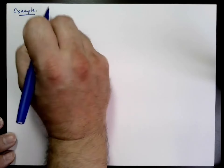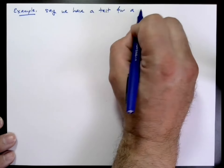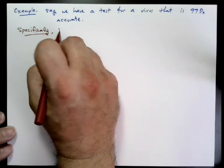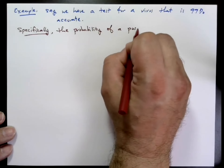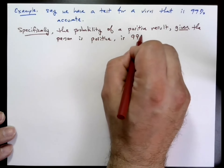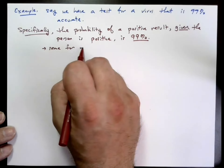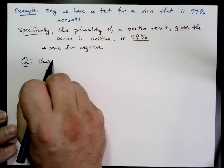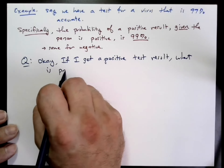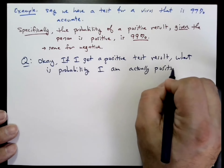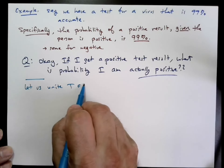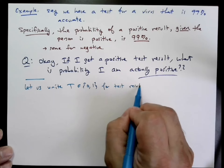Let's say we have a test for a virus that's 99% accurate. Specifically, the probability of a positive result given that the person is positive is 99%. So I can ask: if I get a positive test result, what's the probability that I'm actually positive? It turns out the answer is not necessarily 99%, and it's a bit complicated to get. We'll use capital T and capital V to represent the status of the test result and the virus being there, where zero represents negative and one represents positive.